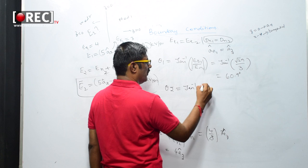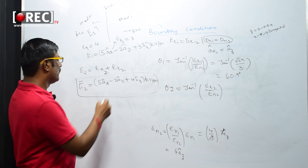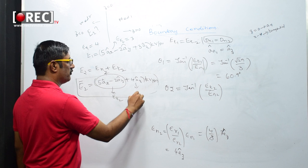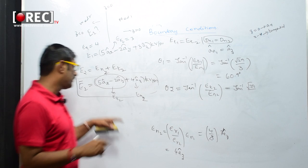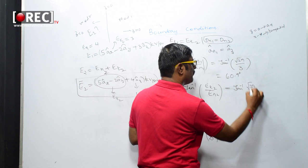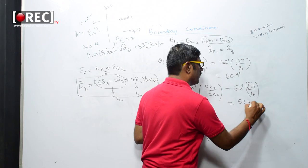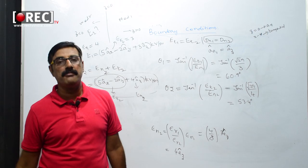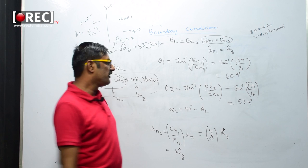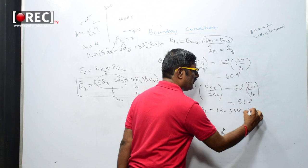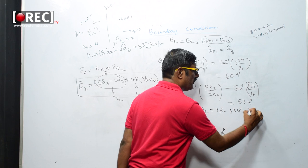For theta2, the formula is tan⁻¹(|Et2| / |En2|). Et2 has the same magnitude √29, but En2 is now 4. So theta2 = tan⁻¹(√29 / 4) = 53.4 degrees. The angle alpha2 that E2 makes with the interface is alpha2 = 90° − theta2 = 90° − 53.4° = 36.6 degrees.